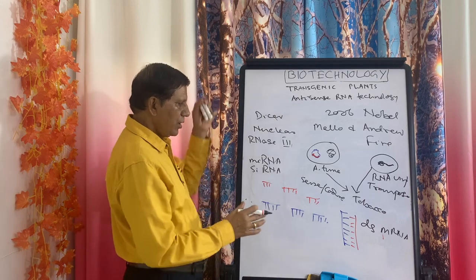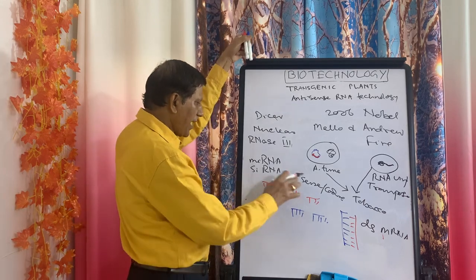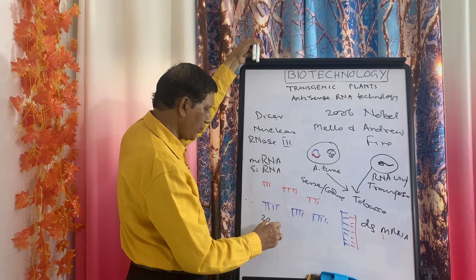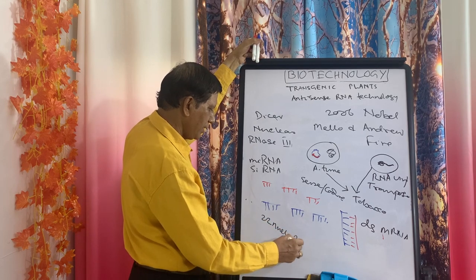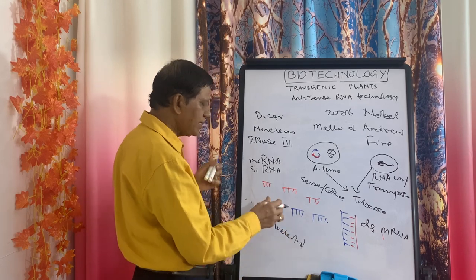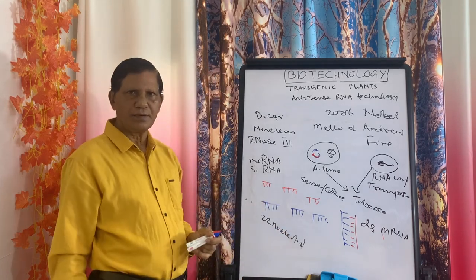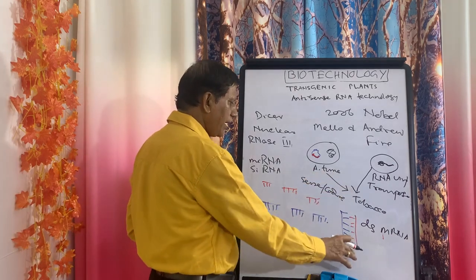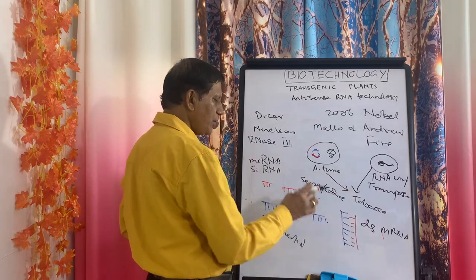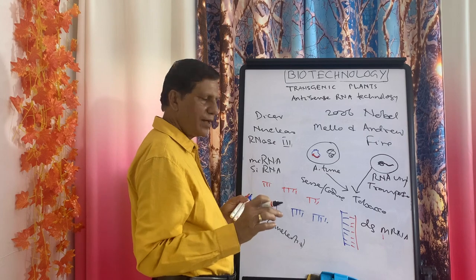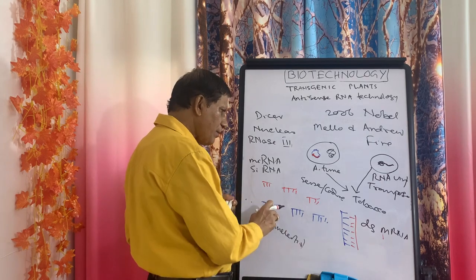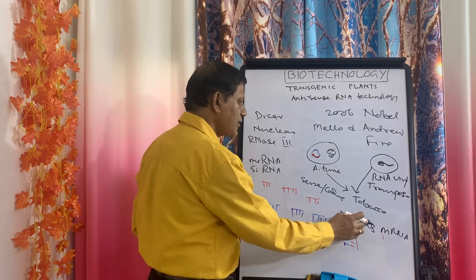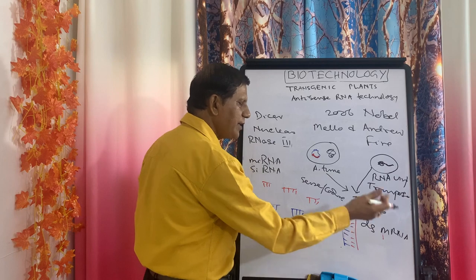So now, inside the tobacco plant where we have introduced both the Agrobacterium and the virus, the double-stranded RNA has been cut into small pieces by Dicer. Some of these pieces are sense mRNA and some are antisense RNA. The double-stranded RNA is cut into fragments of 22 nucleotides each.